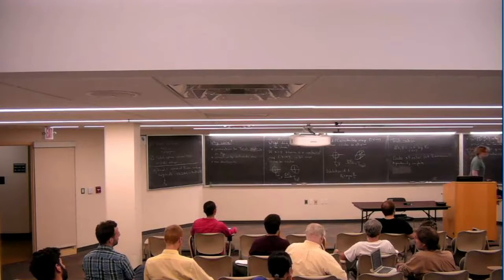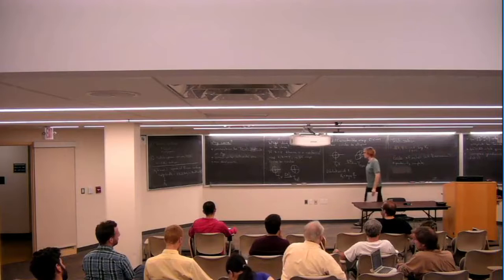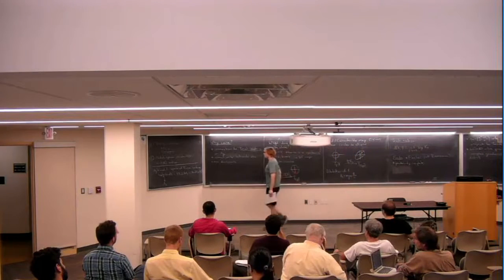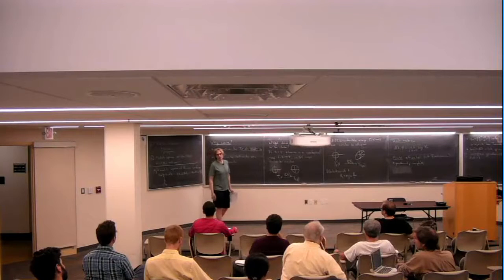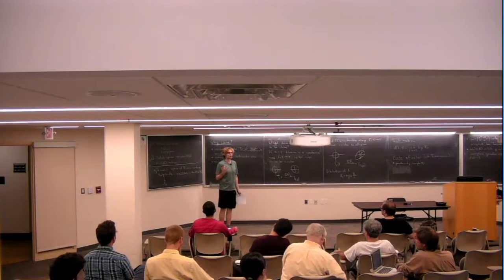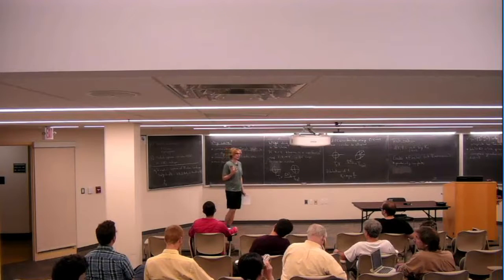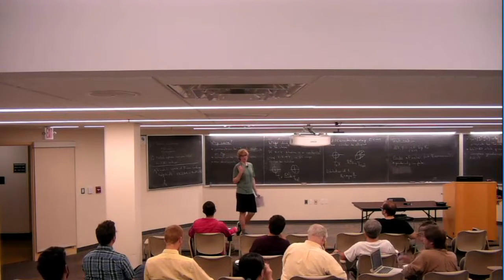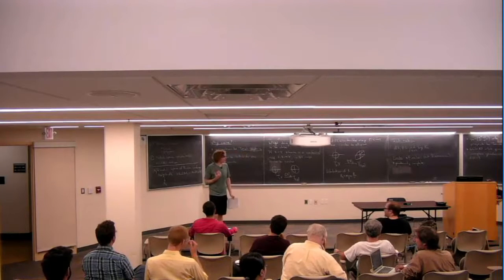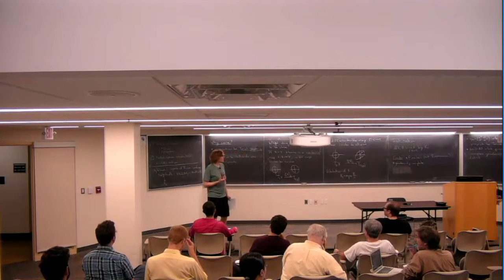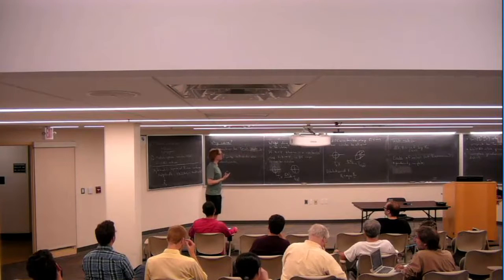For complex geometers: the Teichmüller metric is the Kobayashi metric on Mg. This means it's the largest metric such that maps from the hyperbolic plane into Mg are distance non-increasing. That's amazing because the definition uses the moduli interpretation of Mg, yet you can forget all about that and recover the metric purely from the complex geometry. It's one of the two or three most important metrics on Mg, alongside the Weil-Petersson metric and the Thurston asymmetric metric.